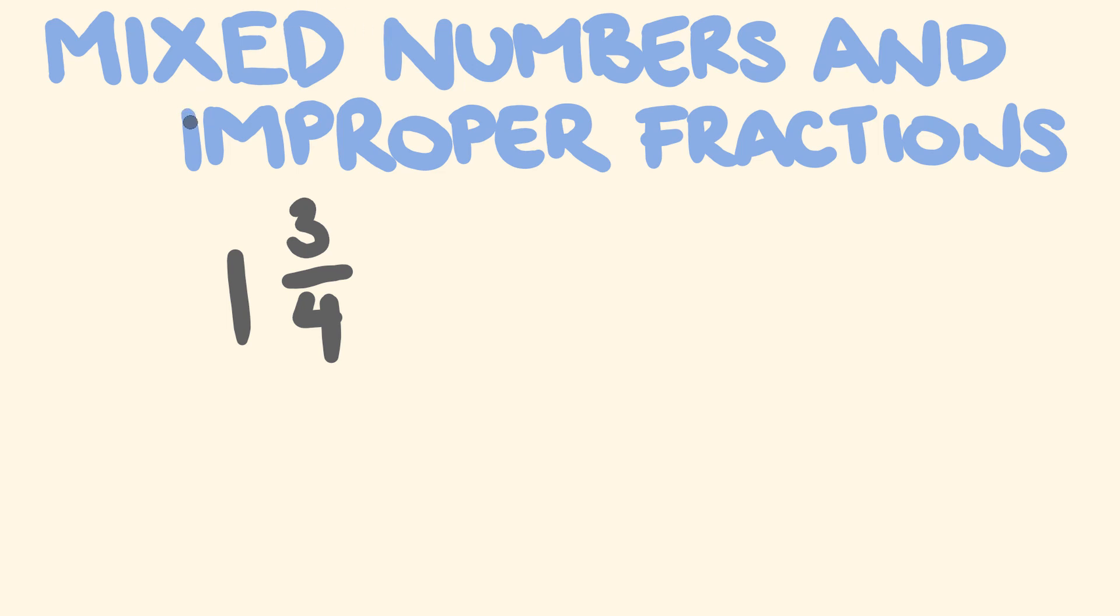Hence it's called a mixed number. An improper fraction is a fraction such as 7 out of 4. It has a numerator which is bigger than the denominator. The top number of this fraction is bigger than the bottom number. And these guys are related to one another and you can change between these guys.